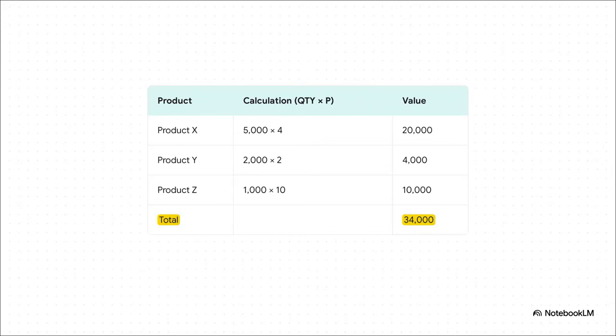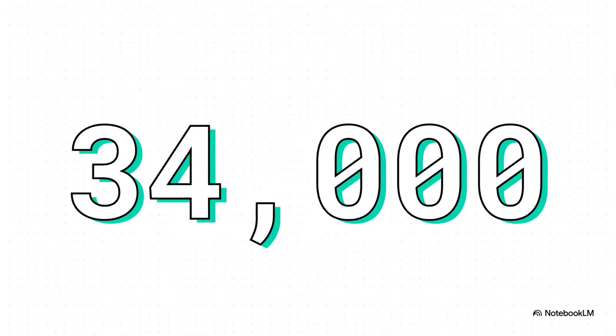So let's plug in our numbers. For product X, that's 5,000 times 4, which gives us 20,000. For product Y, it's 2,000 times 2, so that's 4,000. And for our pricey product Z, 1,000 times 10 gives us 10,000. So you take those three values, add them all together, and boom! There it is! The GDP for our economy in 2009 is 34,000. That's it! We've just put a single number on our entire economy's output for the year.